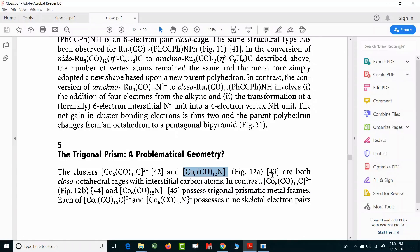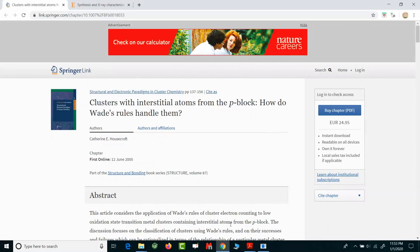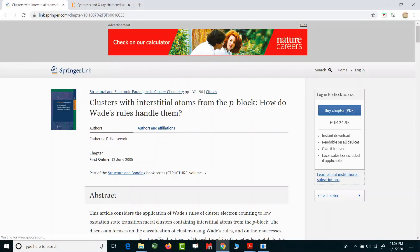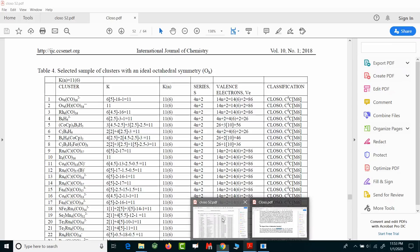If you are not able to access these PDFs, there is a Facebook group with the name Reagent Blues. I'm admin of that particular group, so I'll post these PDFs there. You can download those PDFs from the Reagent Blues Facebook group. I'll upload these PDFs there as well. In case you have access to these articles, this is the article 'Clusters with Interstitial Atoms from P Block: How Do Wade's Rules Handle Them?' On page number 12 you'll find that particular reference.